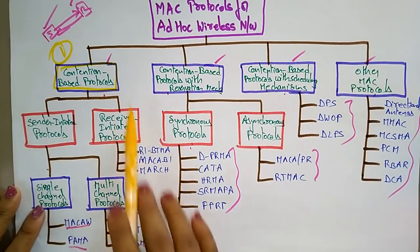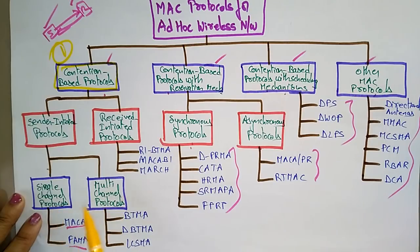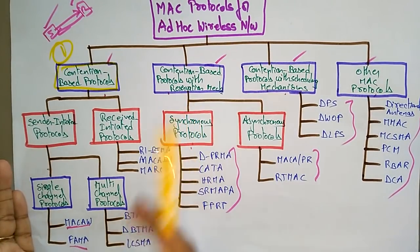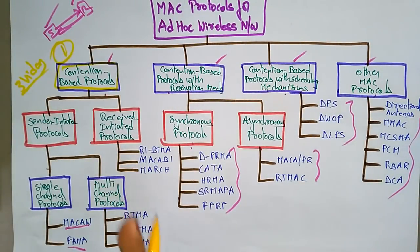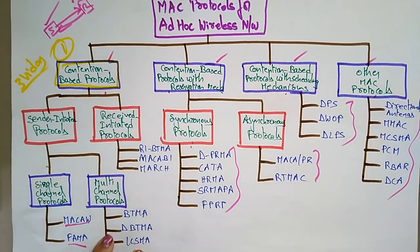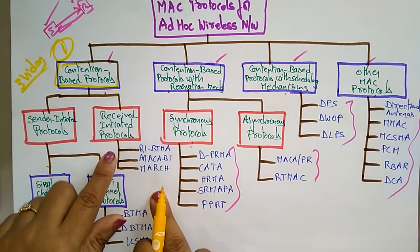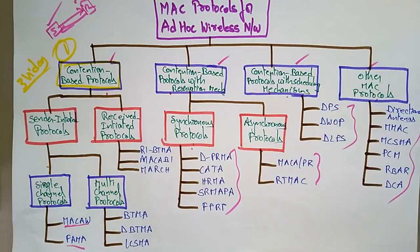Contention-based protocols are sender-initiated and receiver-initiated. The sender-initiated ones are random access protocols, again divided into single channel protocol and multi-channel protocol. I want to cover contention-based protocols in three videos — the first video explains single channel protocols, the next covers multi-channel protocols, and after that the receiver-initiated protocols.